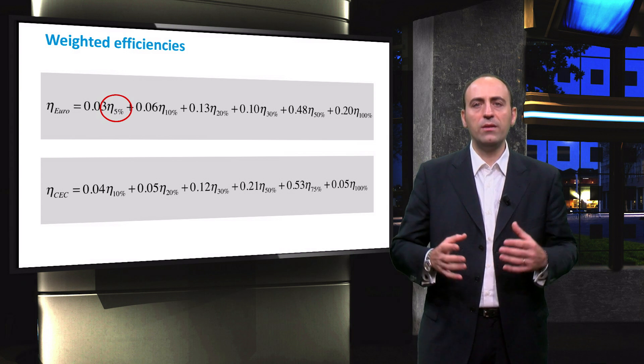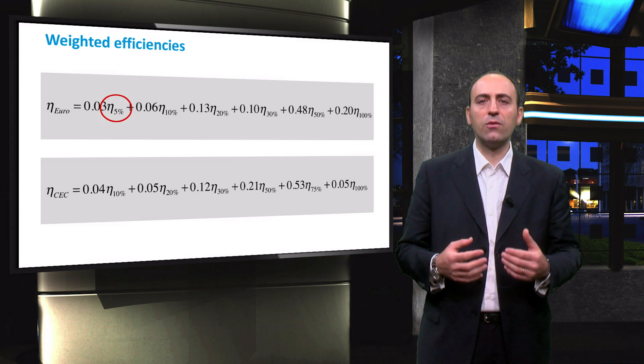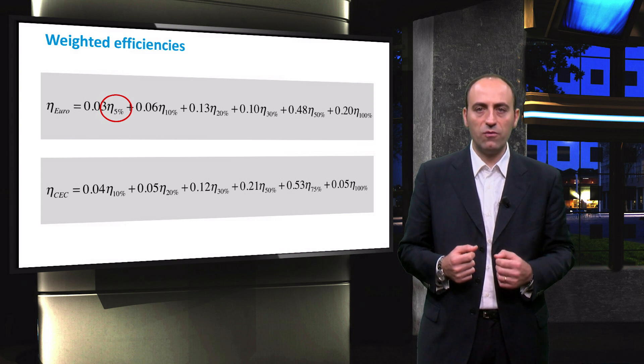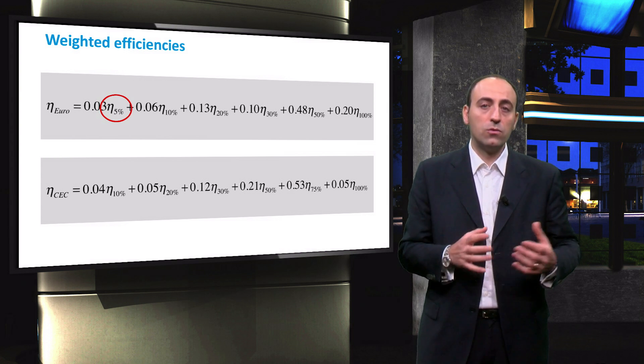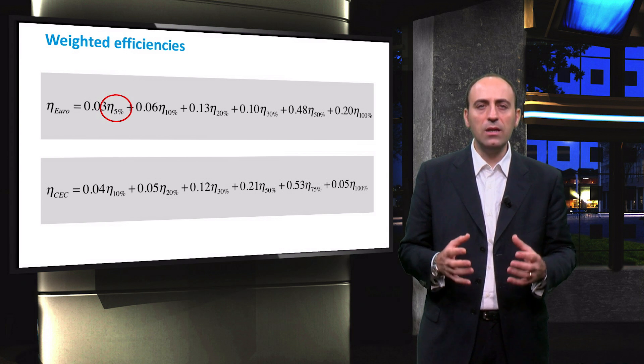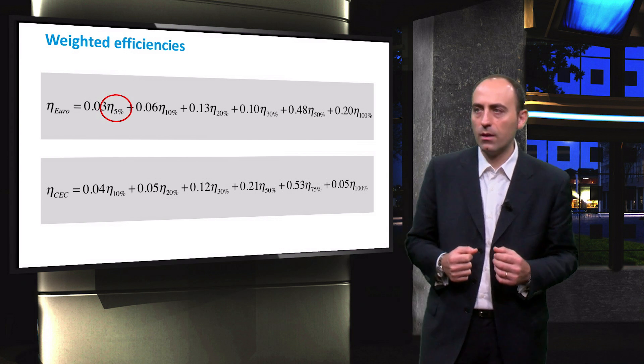Even if the weighted efficiencies are a more accurate approximation of the effective performance of the inverter compared to the peak efficiency, it is still only an average value. If a better estimate of the real-time power output of a PV system is needed, a more accurate representation of the instantaneous inverter performance at every level of input power and voltage must be developed.